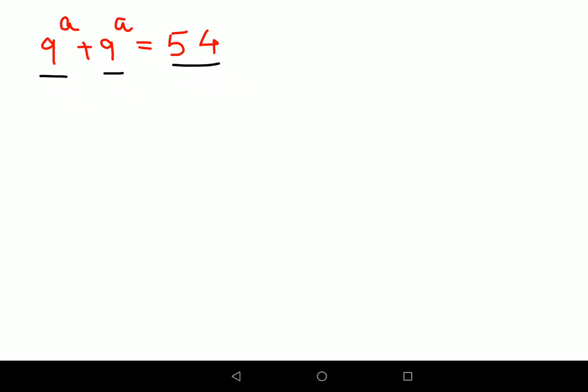Now please understand here we will do step by step. First we know that there is one 9 raised to a and another 9 raised to a and both of them are getting added. So I can write this as 2 into 9 raised to a equals to 54.